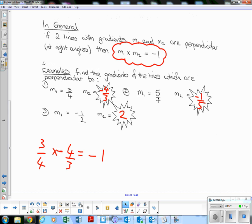Here M1 is 5, or like 5 over 1, flip that will be 1 fifth, change the sign, negative 1 fifth. Question number 3, M1 is negative 1 half, flip that upside down, we'll get negative 2 over 1, or just negative 2, change the sign, get a gradient of 2.